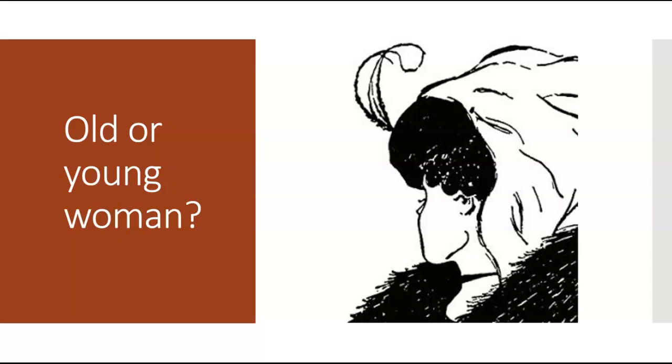So in case you're having a hard time, as I've said that, I'm suddenly seeing the old woman. So the young woman, this would be her nose. There's her eyelashes. This is her ear. This is her chin.